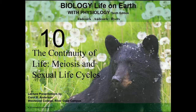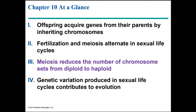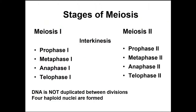Let's continue talking about meiosis in more detail. My name is Professor Hudson and you are viewing narrated PowerPoint lectures for chapter 10. Meiosis reduces the number of chromosome sets from diploid to haploid. In the previous segment we left off by talking about the various stages of meiosis, and now we will look at each one of these stages in detail.